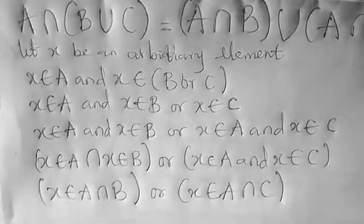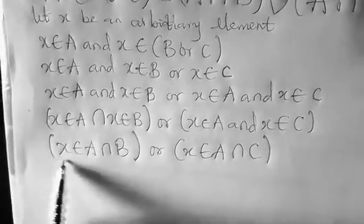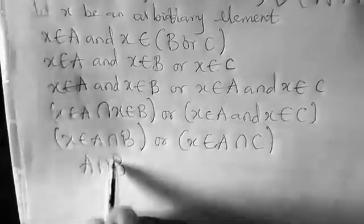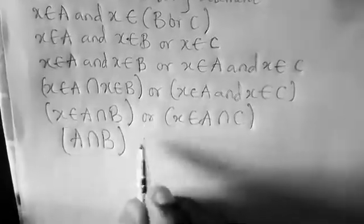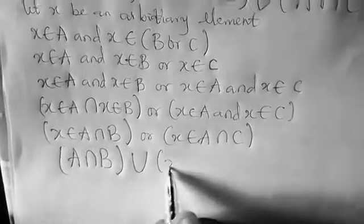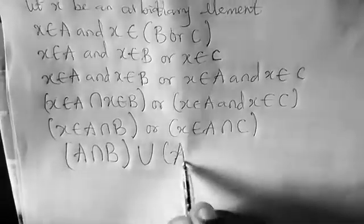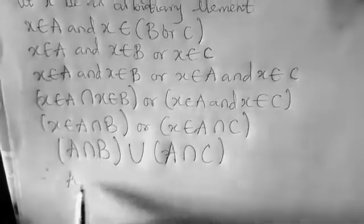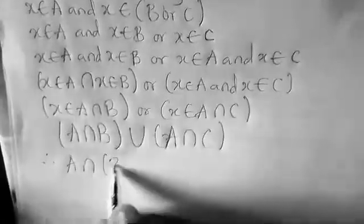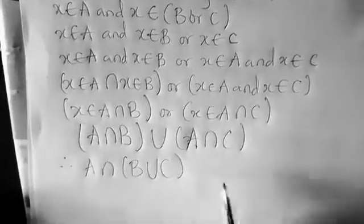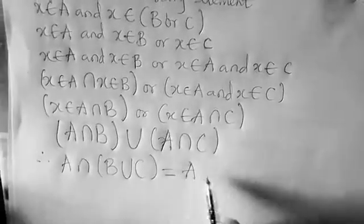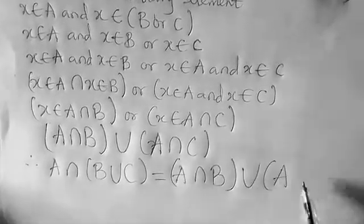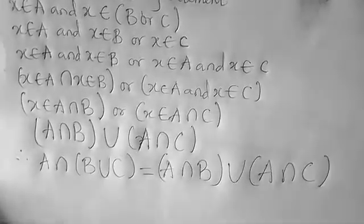That means if you remove it from this equation now, then you now have A ∩ B. Your 'or' means union. A again, intersection C. So therefore, A ∩ (B ∪ C) is equal to (A ∩ B) ∪ (A ∩ C).